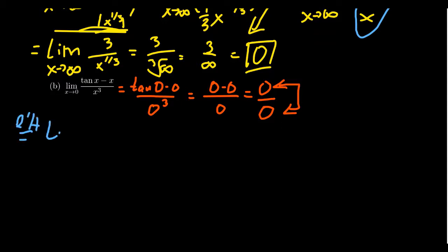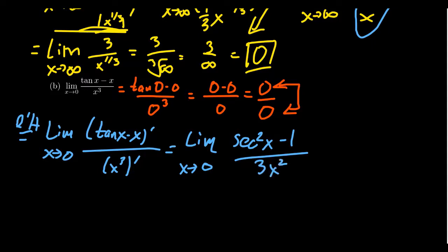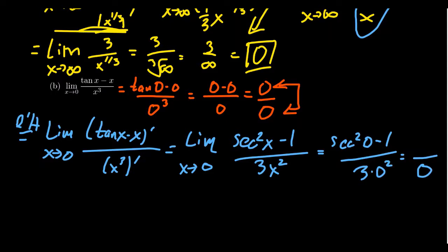We take the limit as x approaches zero, the derivative of tangent of x minus x in the numerator, and the derivative of x cubed in the denominator separately — not using the quotient rule. The derivative of tangent is secant squared, the derivative of x is one, so the numerator becomes secant squared x minus one. By the power rule, the derivative of x cubed is 3x squared. Plugging in x equals zero gives secant squared of zero minus one over three times zero squared. Since secant of zero equals one over cosine of zero equals one, the numerator is one minus one equals zero, so we still have zero over zero.